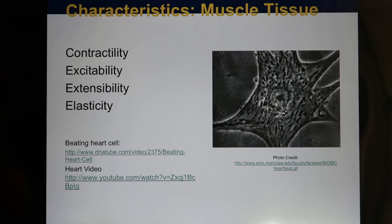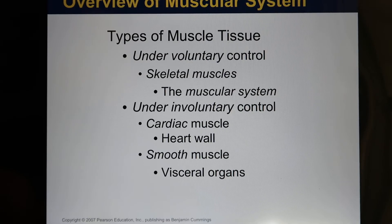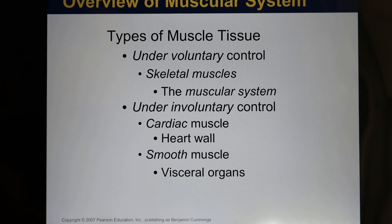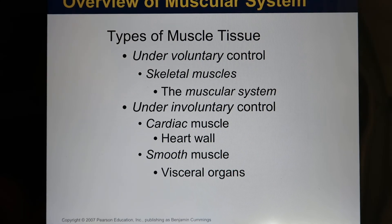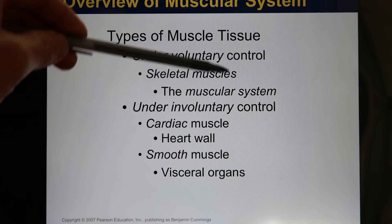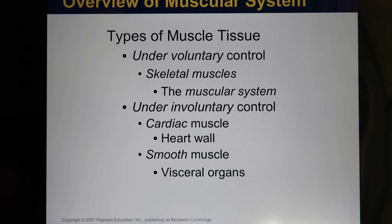This is heart muscle on a petri dish — they're able to contract. We have three different kinds of muscle. The ones you can voluntarily control, we call skeletal muscle. You also have cardiac muscle and smooth muscle, which you cannot voluntarily control. Today we're mainly focused on skeletal muscle.